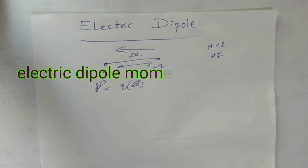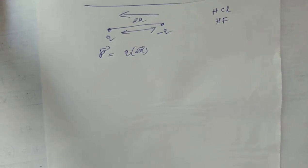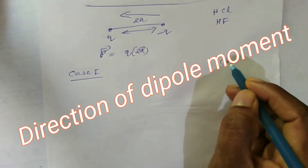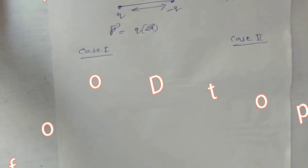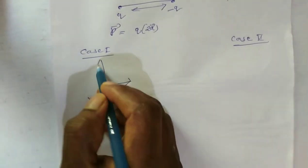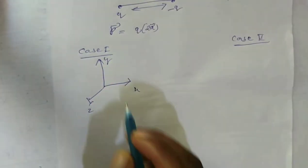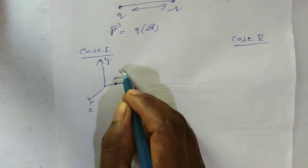To understand this, I am going to take two scenarios — Case 1 and Case 2. We are going to consider the dipole along the x-y-z direction. In Case 1, the distance between the two charges is 2a.